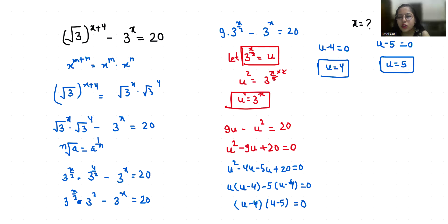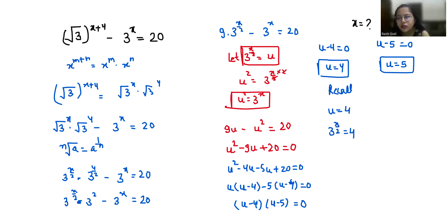Now let's recall the value of u. Since u equals 3 power x by 2, for u equals 4 we have 3 power x by 2 equals 4, and for u equals 5 we have 3 power x by 2 equals 5.